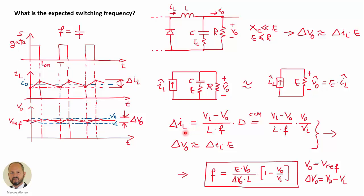From the analysis of the buck converter operating in continuous conduction mode, we can obtain the value for the current ripple. We can substitute D, the duty cycle, by the ratio of the output voltage over the input voltage. Combining expressions, we finally get the switching frequency at a given operating point as a function of the output voltage, input voltage, inductor value, capacitor series resistance, and output voltage ripple, where delta VO is the high level minus the low level of the hysteretic comparator — the peak-to-peak ripple at the output.